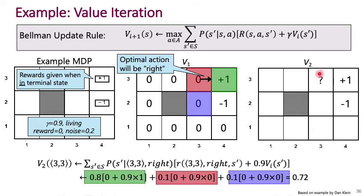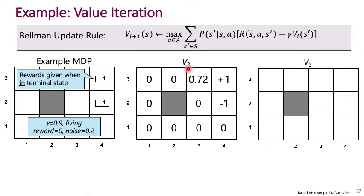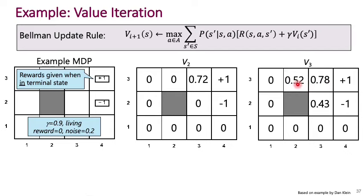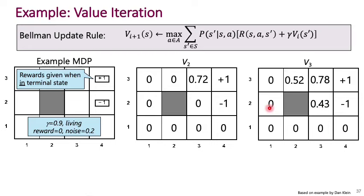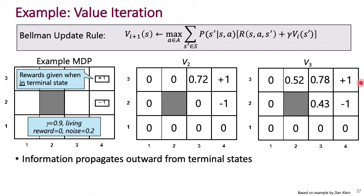At this point, all other squares will have zeros — only (3,3) gets updated to 0.72. At V3, you'll find 0.52 here and 0.43 over here, with zeros elsewhere. You can see how the reward information is propagating outward from the terminal states, backing up the rewards through the entire value function matrix. If you keep repeating this, the information continues to spread until all states have correct value estimates.